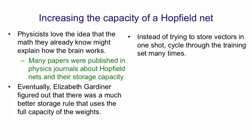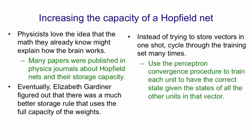Instead of trying to store vectors in one go, what we're going to do is cycle through the training set many times. So we lose our nice online property that you only have to go through the data once, but in return we're going to gain more efficient storage. What we're going to do is use the perceptron convergence procedure to train each unit to have the correct state given the states of all the other units in that global vector that we want to store. You take your net, you put it into the memory state you want to store, and then you take each unit separately and ask: would this unit adopt the state I want for it given the states of all the other units? If it would, you leave its incoming weights alone. If it wouldn't, you change its incoming weights in the way specified by the perceptron convergence procedure.